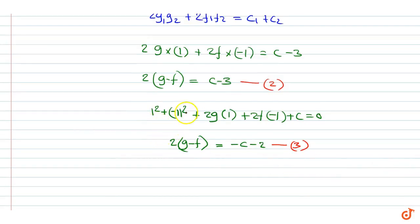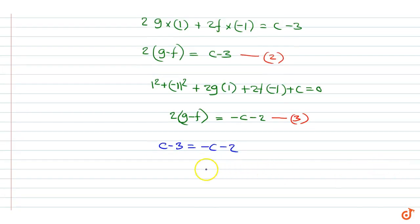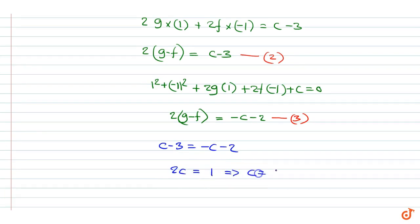Now we equate equations 2 and 3 and write c - 3 = -c - 2. This gives 2c = 1, giving c = 1/2.